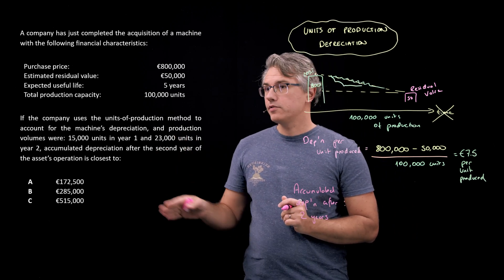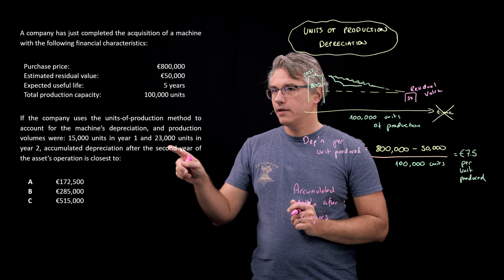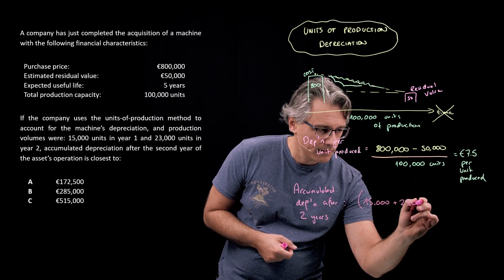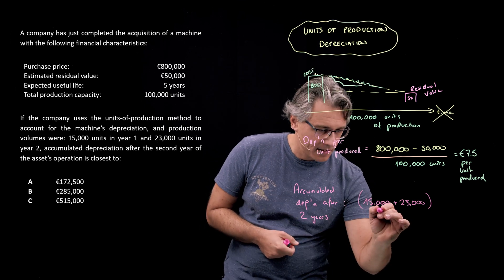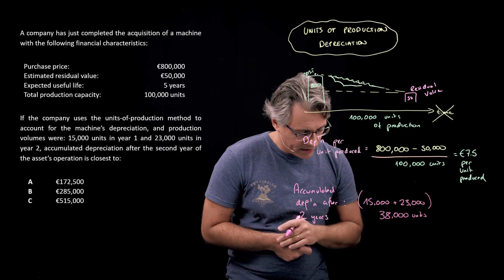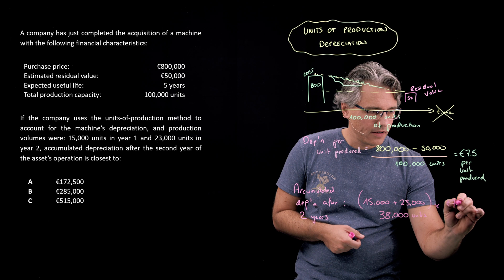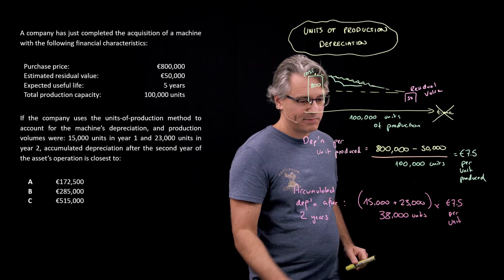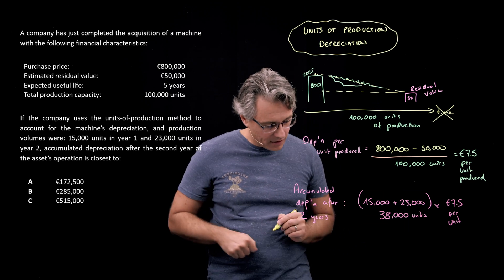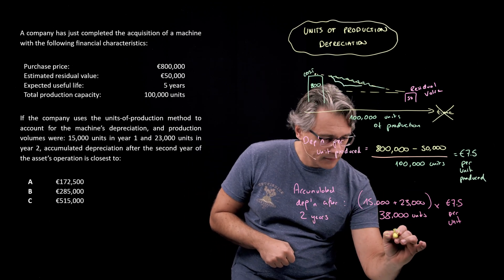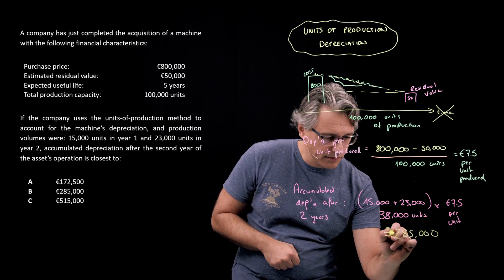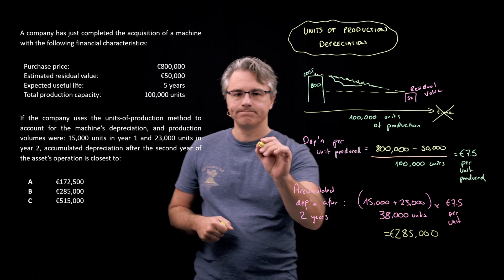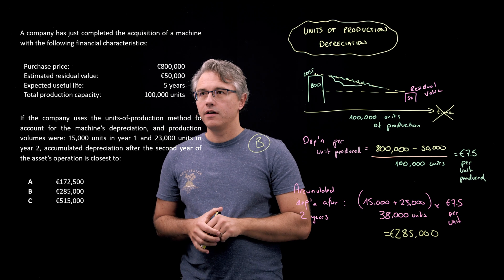We need to take the volumes actually produced: 15,000 units in year one and 23,000 units in year two. So 15,000 plus 23,000 gives us 38,000 units overall. We multiply that by €7.50 per unit — you can easily do this on your calculator: 38,000 times 7.5 equals €285,000. So the correct answer to the question is answer B: €285,000 euros.